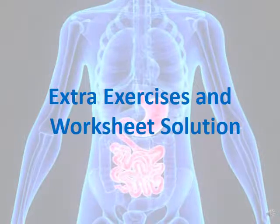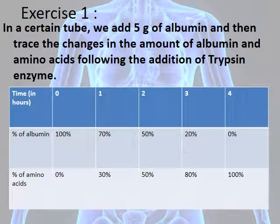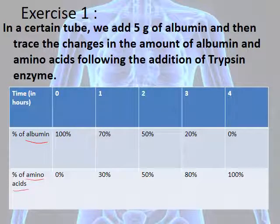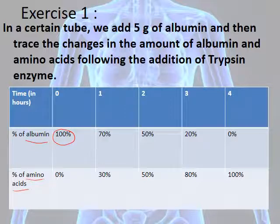Let's move to the extra exercise. In a test tube we add 5 grams of albumin, then trace the changes in the amount of albumin and amino acids following the addition of the enzyme trypsin. This table shows the variation of the percentage of albumin and amino acids as a function of time in hours: 0, 1, 2, 3, and 4 hours. At the beginning, the percentage of albumin was 100% and that of amino acids was 0%.